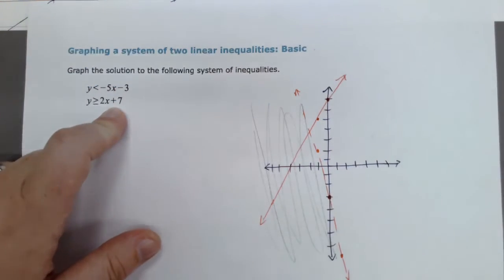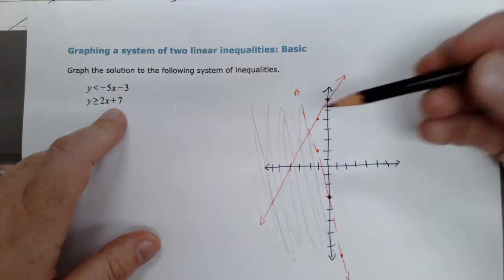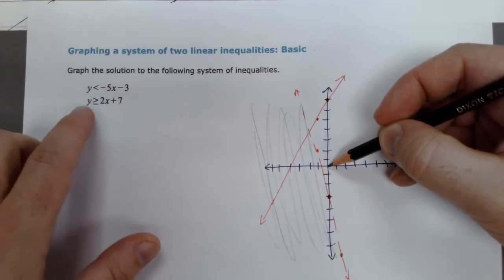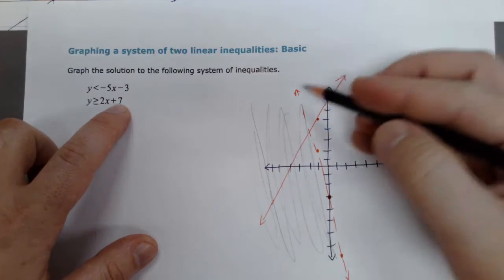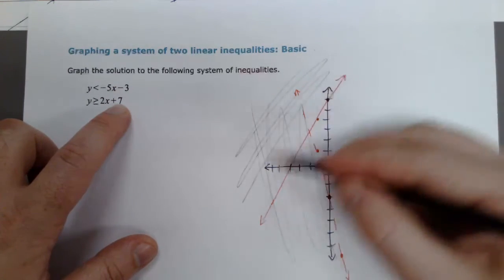And then where is this one going to shade? So, this one, if I try my test point at 0, 0 again, I get 0 is greater than or equal to 7. That is false as well, which means I'm shading above this line.